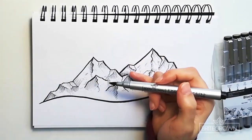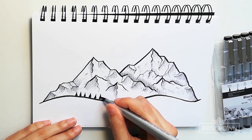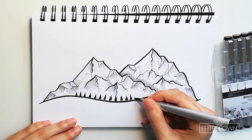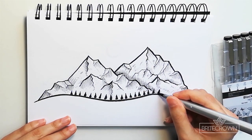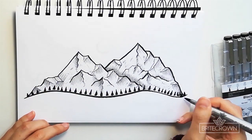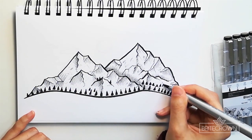So now I'm just using the brush again to create a sort of forest line on the bottom of my mountain range. I'm just creating some triangular shapes. It's very simple and very easy to do using the brush tip.